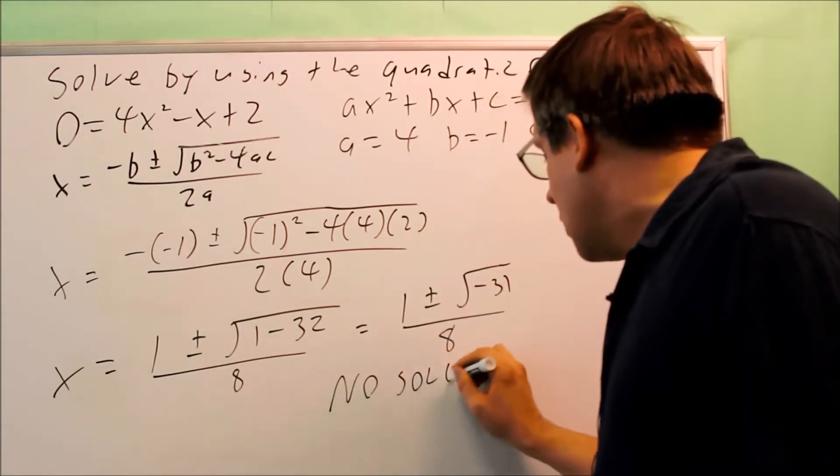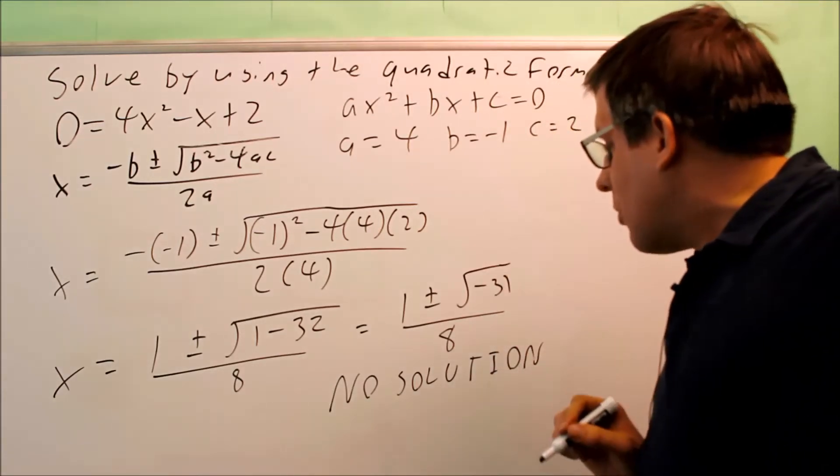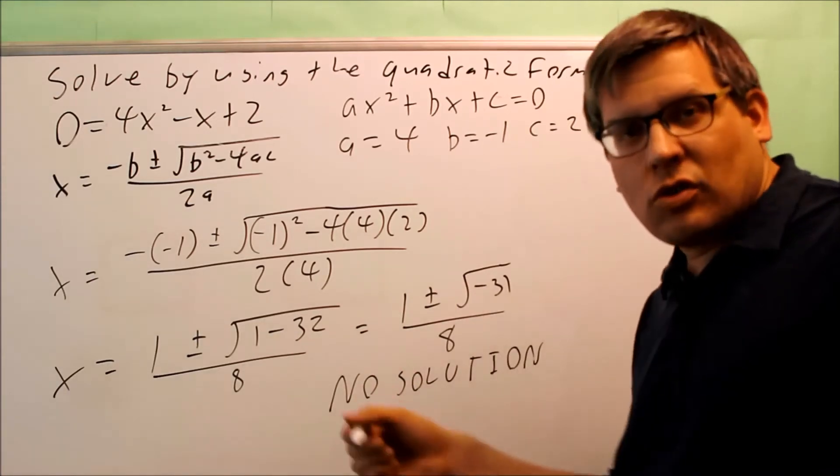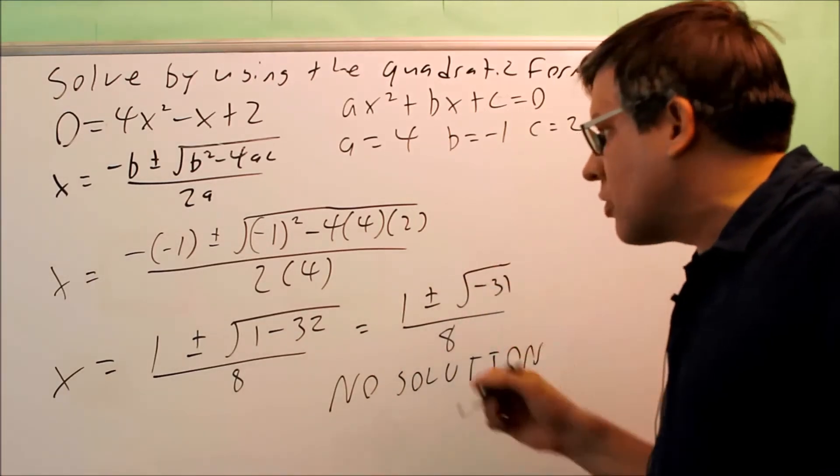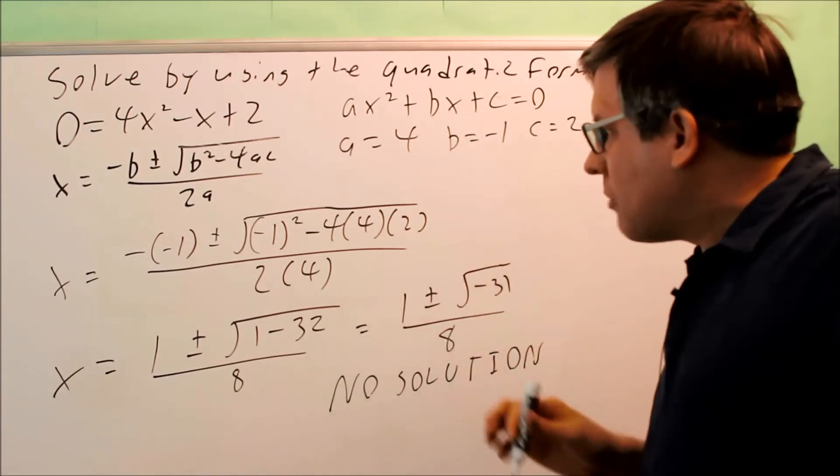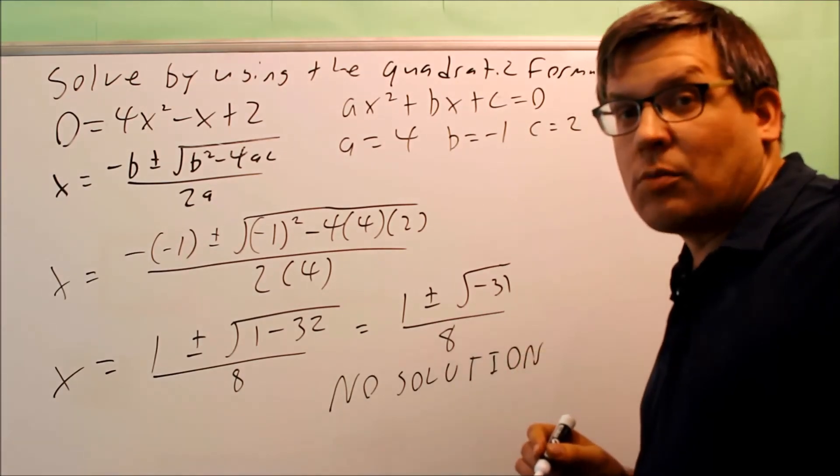what you're going to do is say no solution because the square root of a negative number is not real. So there's no real answer, you can put no real solution. There are imaginary numbers, and we'll talk about that in a later section. But as of where this problem comes from, this particular section, we're going to say no solution because we have a square root of a negative number.